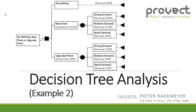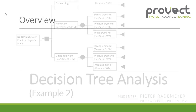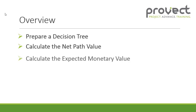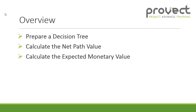In this video I'll be doing a second decision tree analysis example. To view my first example you can click on the link below in the description box. First of all we will be preparing a decision tree based on example 2. We will be calculating the net path value, the expected monetary value, and then make a final decision.